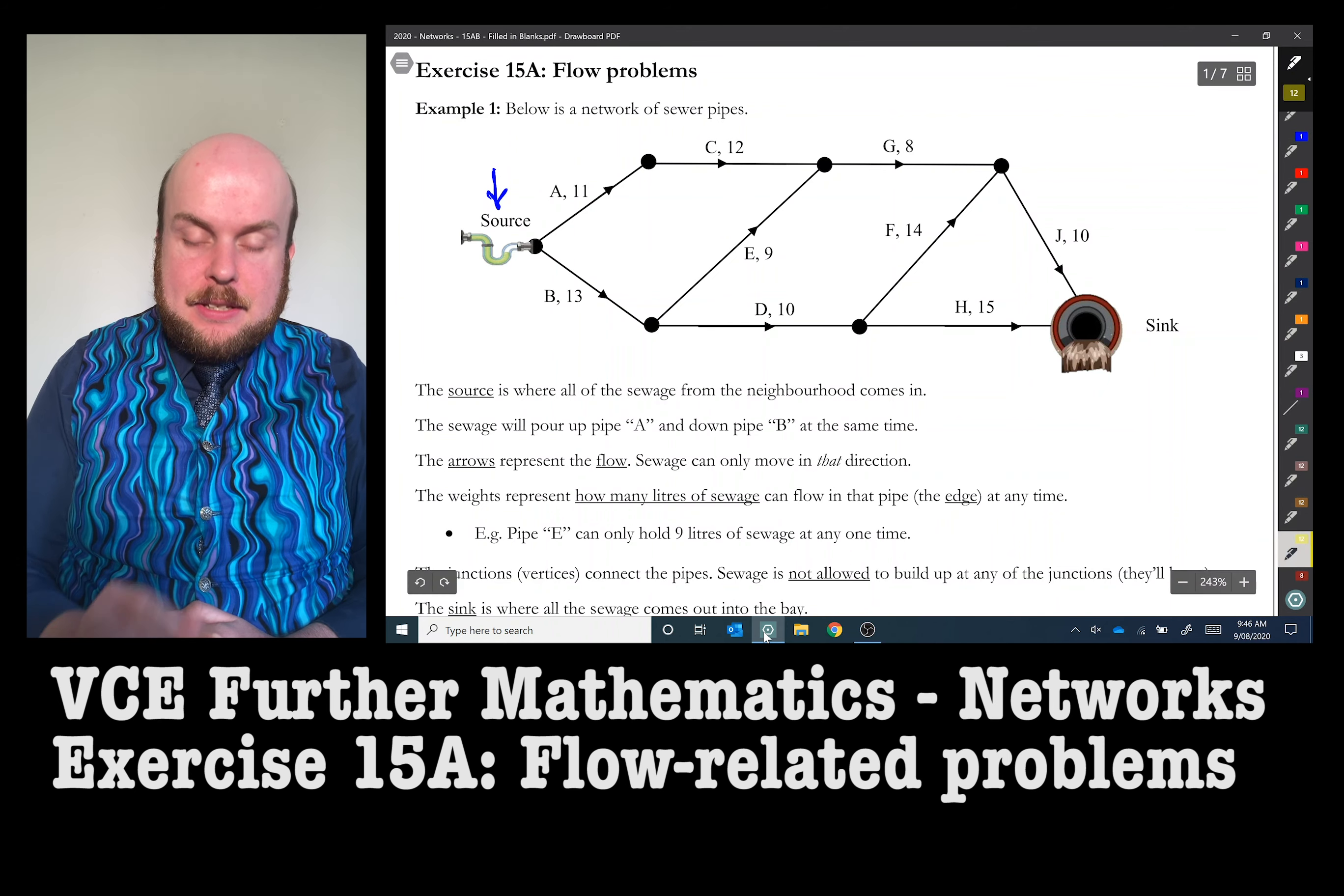You can go up here, across here, can't go back down E, go through G, can't go back down through F, and you can get through J. So that's the only direction that the sewage that goes through A can go through. If I look at the pipes, there's 11 liters can go through A, 12 liters can go through C, 8 liters can go through G, and 10 liters can go through J.